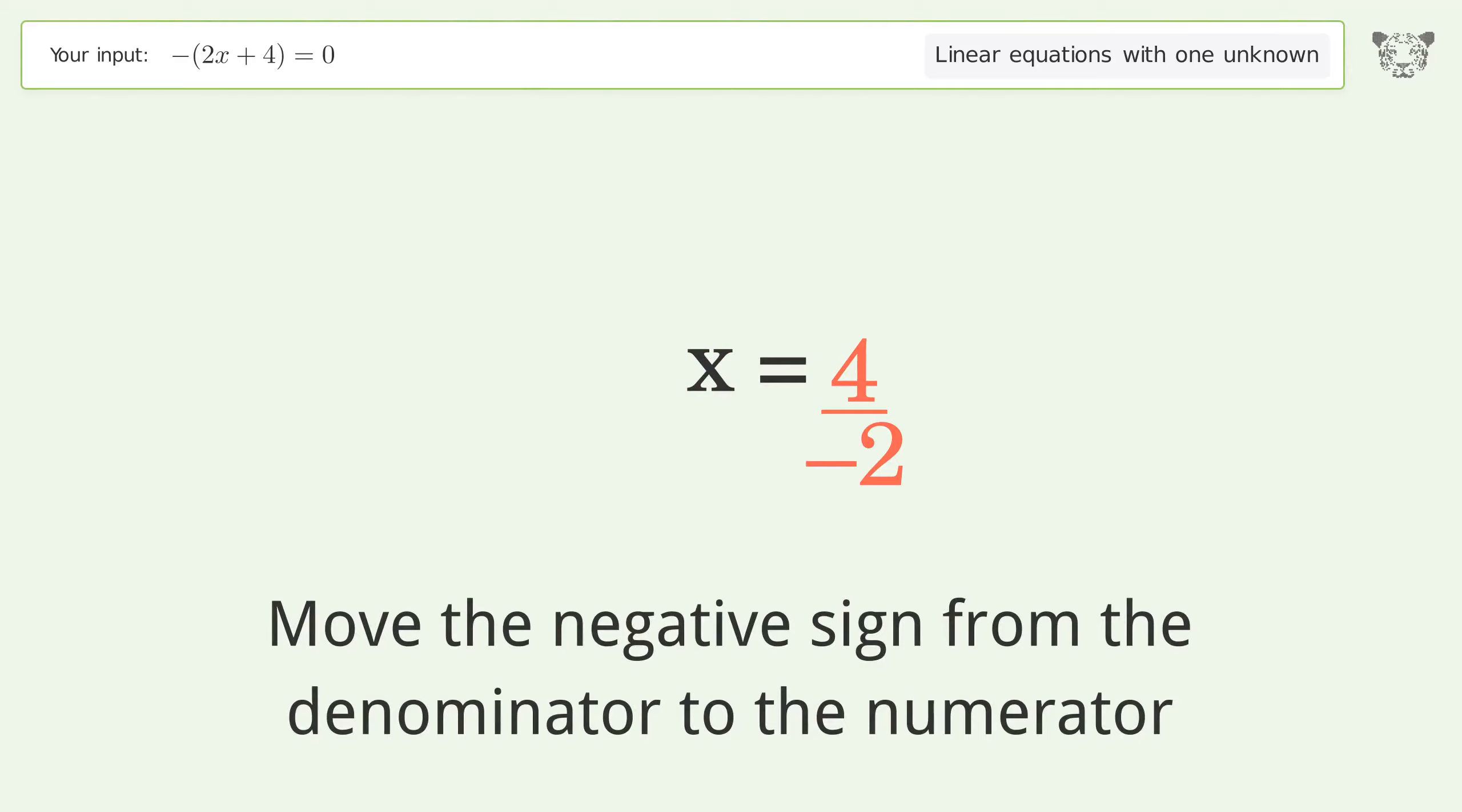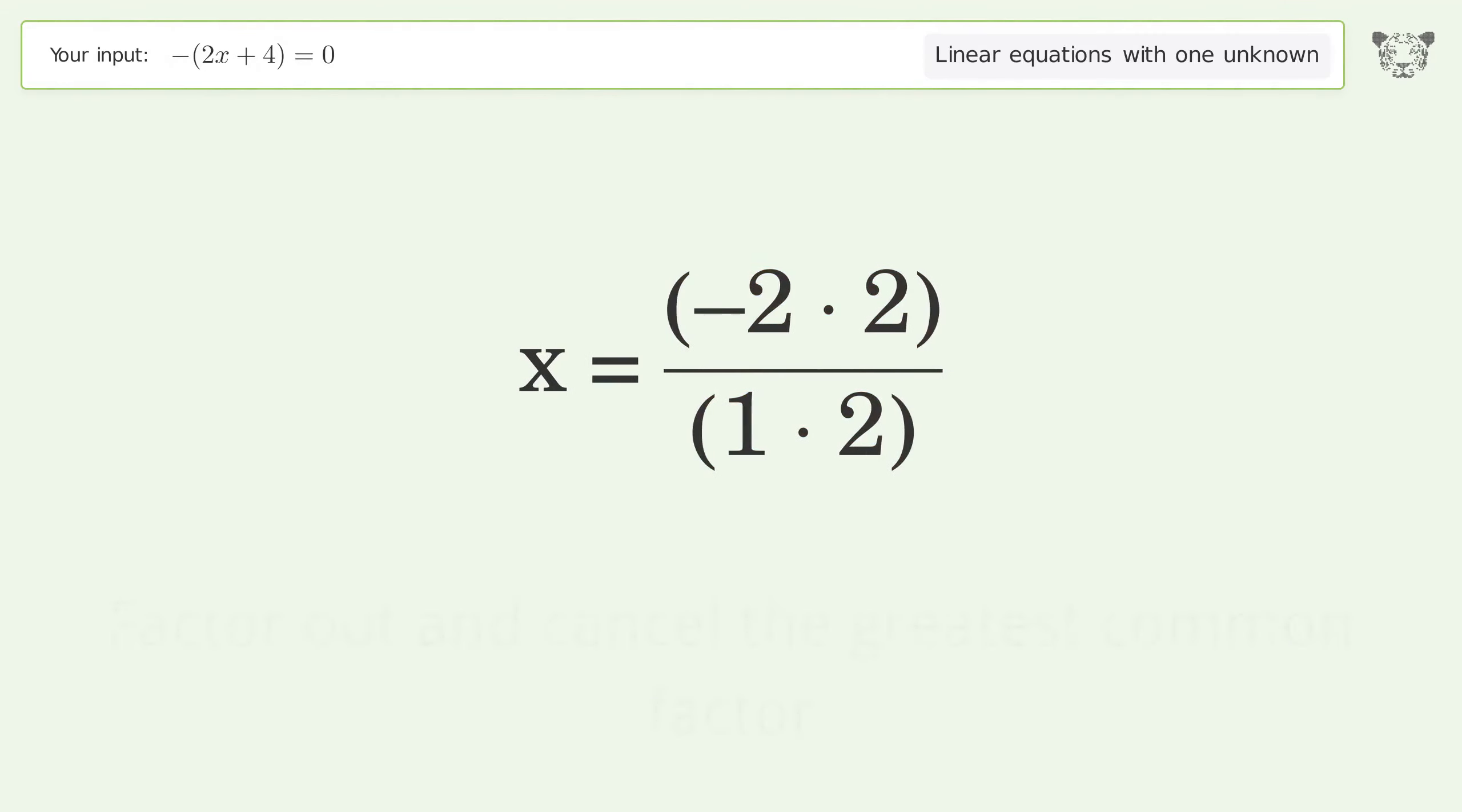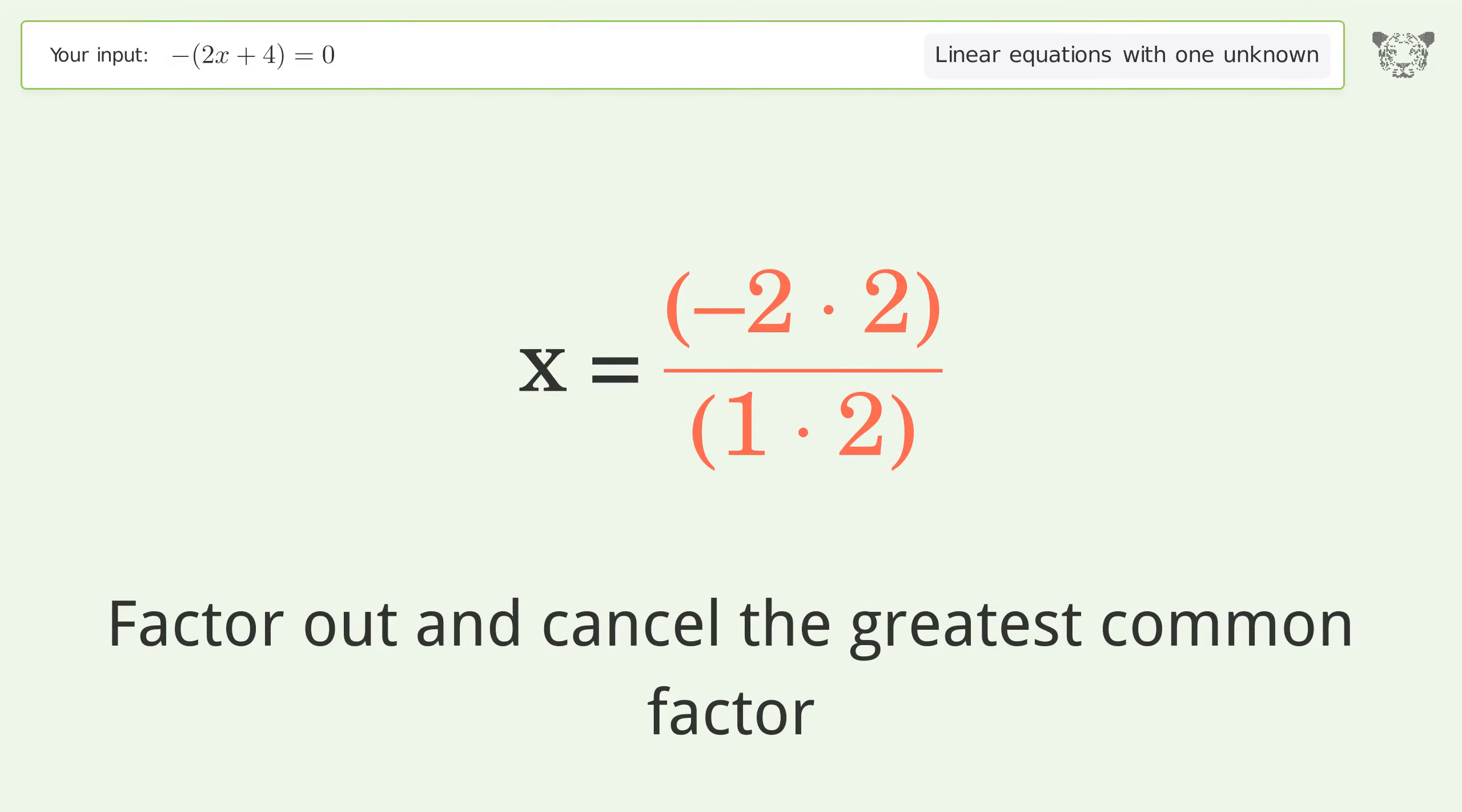Move the negative sign from the denominator to the numerator. Find the greatest common factor of the numerator and denominator. Factor out and cancel the greatest common factor.